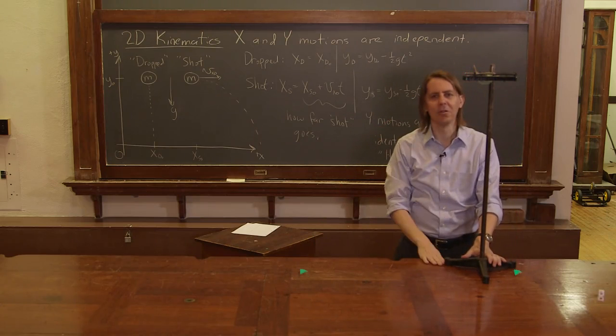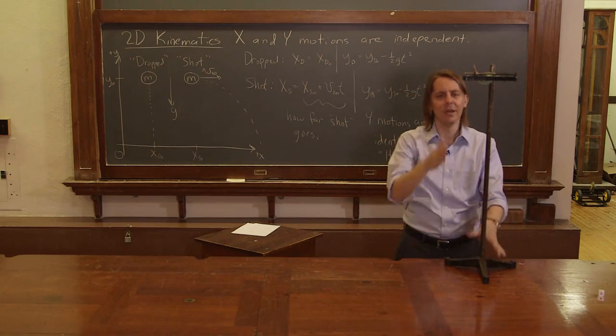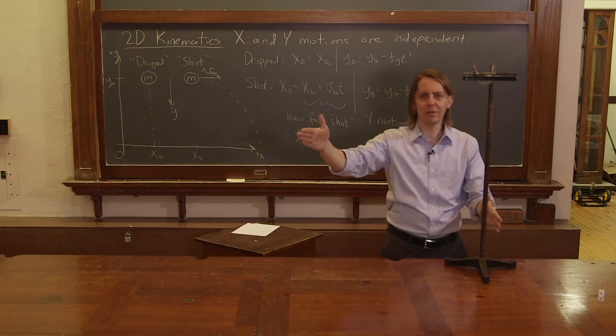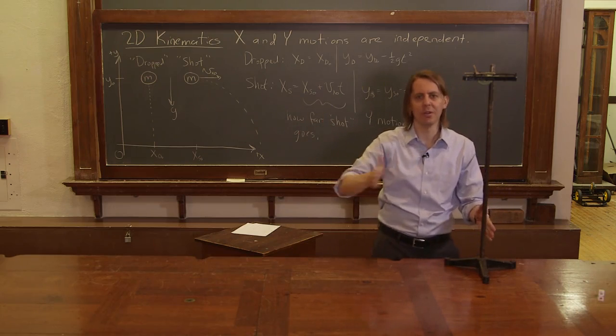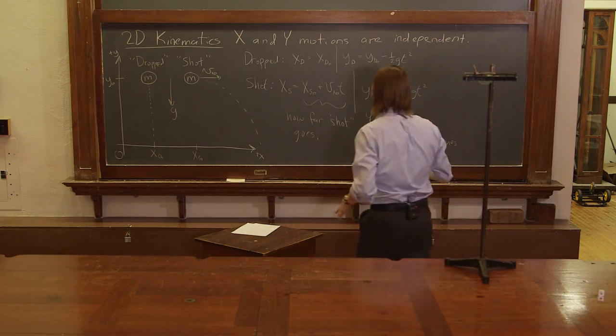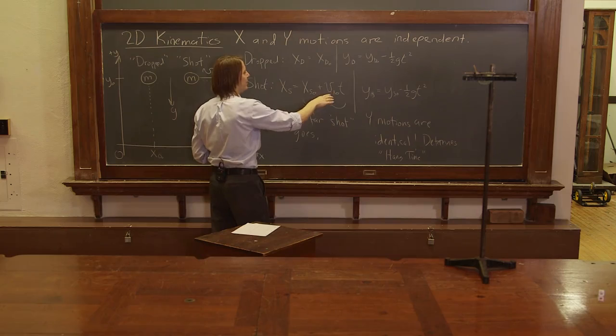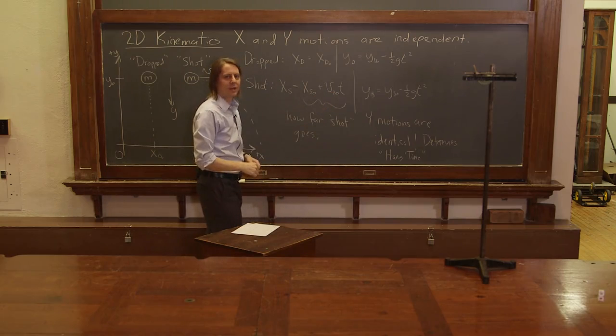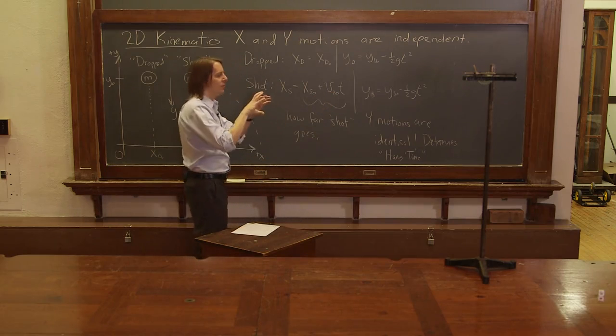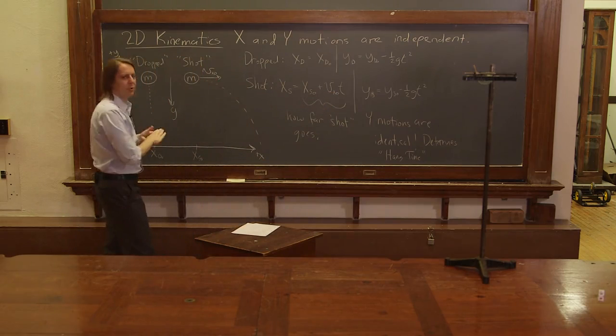So let's see if that works. There you go. Within my ear, same time. And except shot made some X motion. It moved in the X. And if you timed how long it took them to drop and you knew the X velocity, you'd see the X velocity's constant and you could figure out how far it went. So that's the first simplest case of 2D kinematics and comparing two motions.